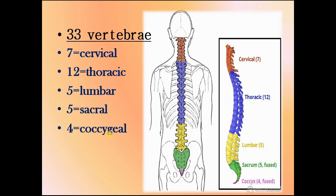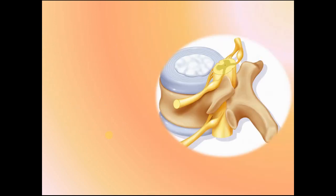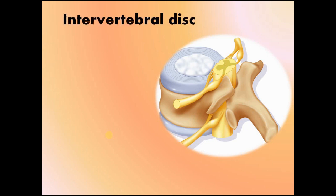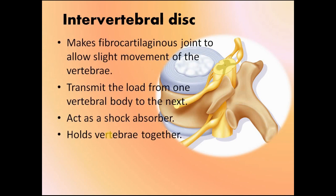All these vertebrae are not in direct contact with each other; there is a special structure present between them — this structure is the intervertebral disc. As the name suggests, it is present between two adjacent vertebrae. Its main functions are: it makes a fibrocartilaginous joint to allow slight movement of the vertebrae, it transmits the load from one vertebral body to the next, it acts as a shock absorber, and it holds the vertebrae together.